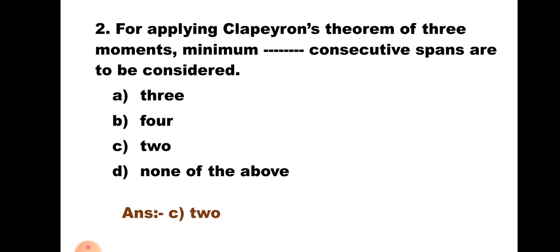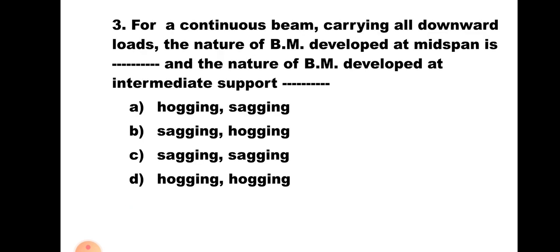Question number two. Question number three. For a Continuous Beam carrying all downward loads, the nature of bending moment developed at midspan is blank, and the nature of bending moment developed at intermediate support is blank. Option A is hogging, sagging. Option B is sagging, hogging. Option C is sagging, sagging. Option D is hogging, sagging. When a beam is subjected to downward loads, sagging bending moment is induced at midspan and hogging bending moment is induced over the intermediate support. Hence the correct answer is B — sagging, hogging.